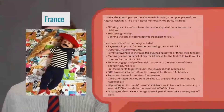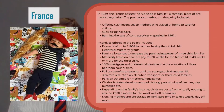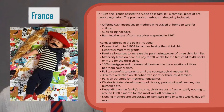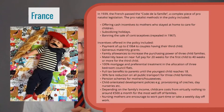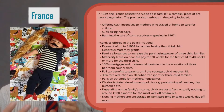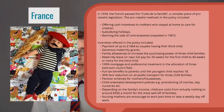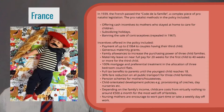France, like many other European countries, has taken on pro-natalist policies. In 1939, the French passed the Code de la Famille, a complex piece of pro-natalist legislation. Pro-natalist methods in the policy included cash incentives to moms who stayed home to care for their children, subsidized holidays for families, and a ban on the sale of contraceptives for about 30-40 years. They also offered payments for having a third child, generous maternity grants, family allowances, and maternity leave of 20 to 40 weeks. Many European countries still have longer maternity leave today to encourage growth, as Europe's growth is slowing down.